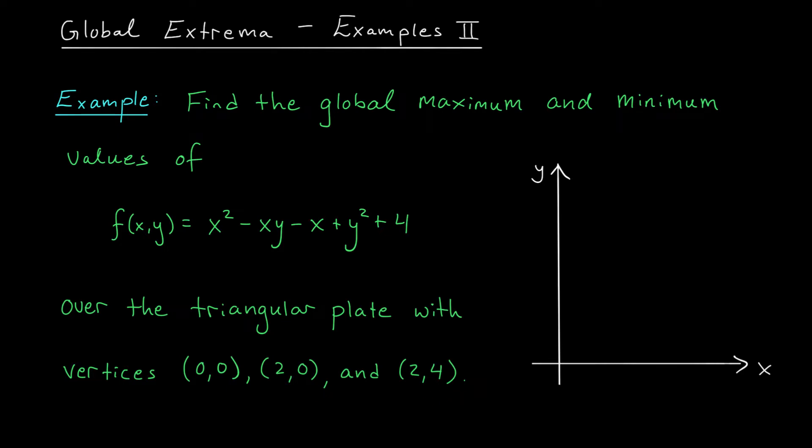Just like in our last example, it'll be helpful to have a visual of this region to work with throughout the problem. So I'm going to go ahead and plot these three points in the plane, (0,0), (2,0), and (2,4). If you connect up the points, you'll see that we're optimizing our function over this triangular region, which maybe I'll call D. Just like before, this includes both the inside and the boundary.